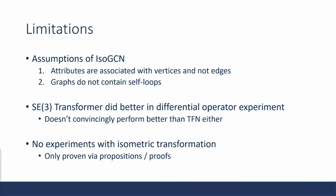There are some limitations that this paper encounters. The first of which are baked into the model design, which are the key assumptions that the ISO-GCN makes when constructing their ISO-adjacency matrices. The first one is that the attributes are associated with vertices and not edges. And secondly, that the graphs do not contain self-loops. And these assumptions might limit the variety of applications that ISO-GCN could be used for. The second one is that the SE3 transformer actually did better than the ISO-GCN in the differential operator experiment. The only time the ISO-GCN did better was when the SE3 transformer ran out of memory. And the ISO-GCN doesn't convincingly perform better than the TFN either. And lastly, one of the reviewers mentioned that there are no experiments done with isometric transformation, which is really the key contribution of this paper. This property that the authors pitch is only proven using propositions and proofs. So we would love to see additional experiments done with more conventional experiments and datasets to really show their method and prove this property of isometric transformation invariance and equivariance.